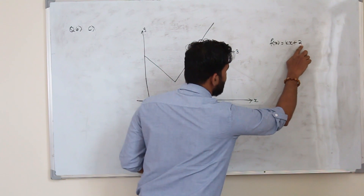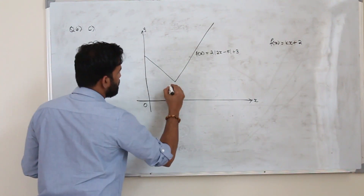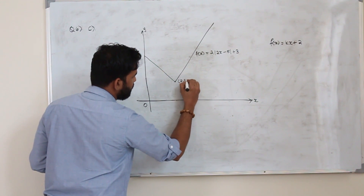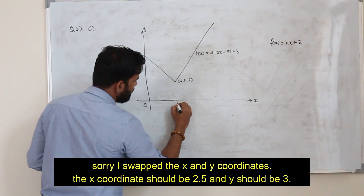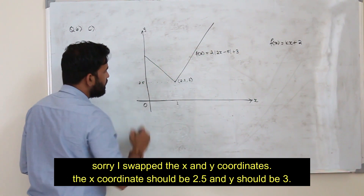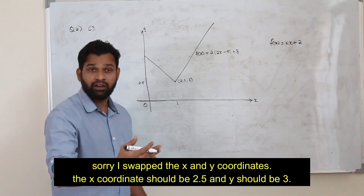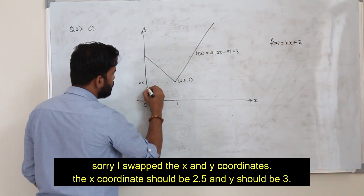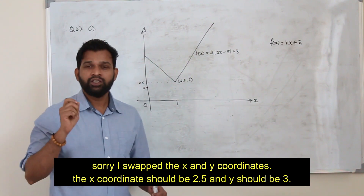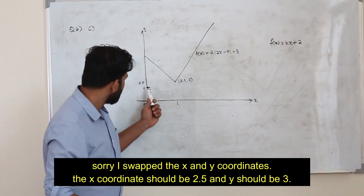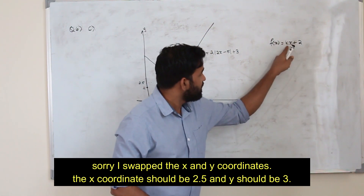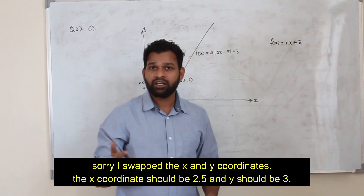This straight line has y-intercept 2. We already know the vertex of our modulus function is (2.5, 3), meaning this point is 3 and this is 2.5. We are dealing with another straight line which has y-intercept 2, so we are going to draw a straight line with y-intercept 2. Now k is the slope of this straight line.